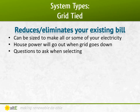The downside to a straight grid-tied system is that if the grid goes out, so will your house's power. Even if it's a beautiful sunny day, your system is required by law to turn off. This is because the inverter is connected directly to the grid. If the grid is out, the linemen will be out there working on restoring power — they are not expecting there to be any power on the lines. If your system was still up, you run the risk of electrocuting them.